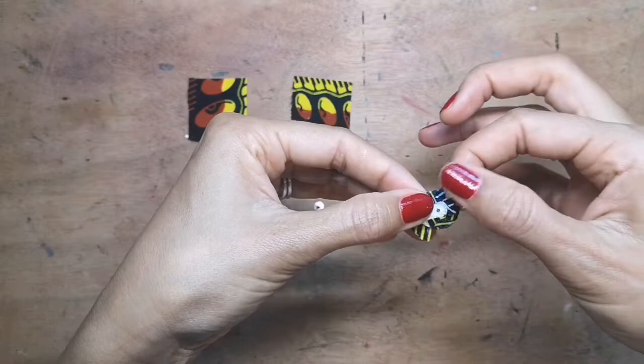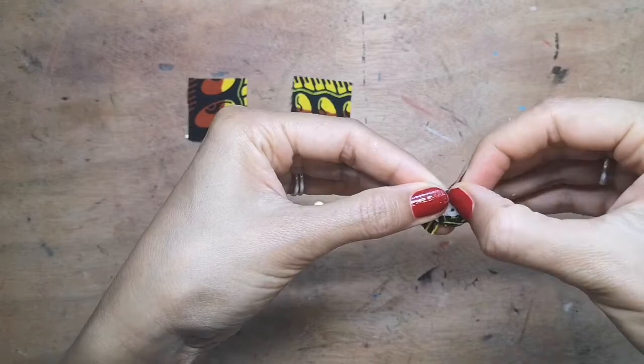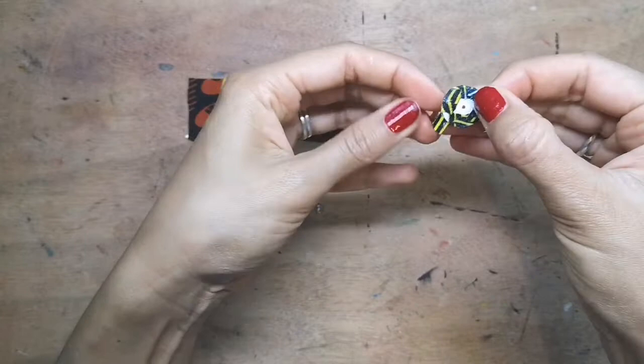The Mod Podge does create little bits so sometimes you just need to rub your fingers together to get those bits off. Keep working all the way round folding in those bits of fabric making sure that they're securely glued with the Mod Podge.